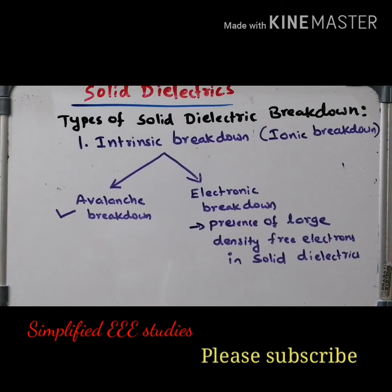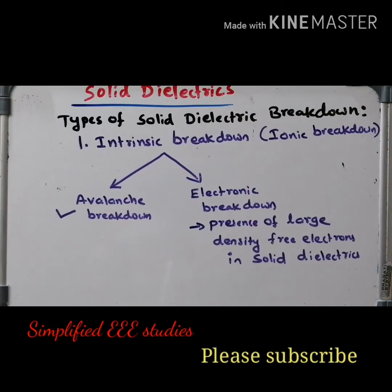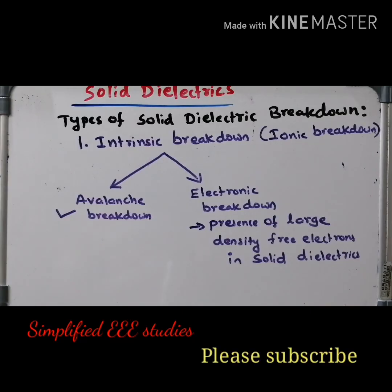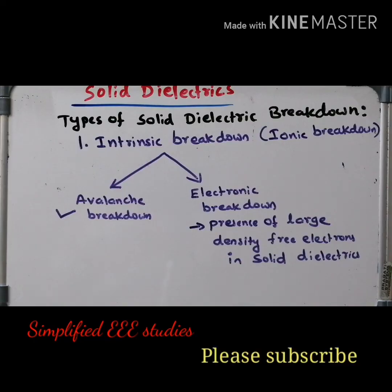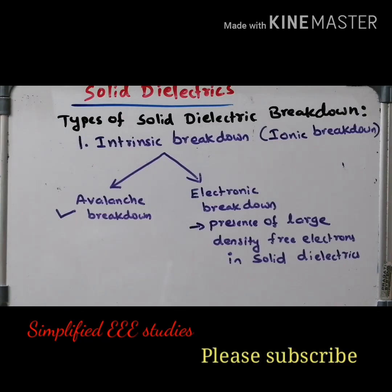So intrinsic breakdown can be divided into two categories: avalanche breakdown as well as electronic breakdown. In avalanche breakdown, the concept is 100% similar to gaseous dielectric breakdown which I explained already. In electronic breakdown, the main reason is the presence of large density free electrons. That's all about intrinsic breakdown or ionic breakdown. Thanks for watching this video — please share and don't forget to subscribe. Thank you again.